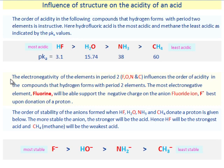The electronegativity of the elements in period 2 (fluorine, oxygen, nitrogen and carbon) influences the order of acidity in the compounds that hydrogen forms with period 2 elements. The most electronegative element, fluorine, will be able to support the negative charge on the anion fluoride ion best upon donation of a proton.